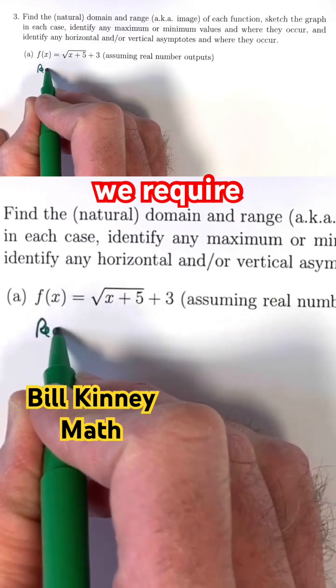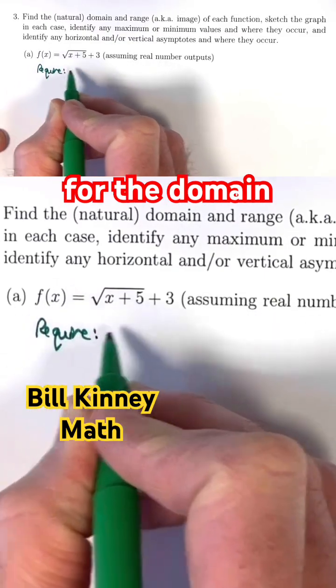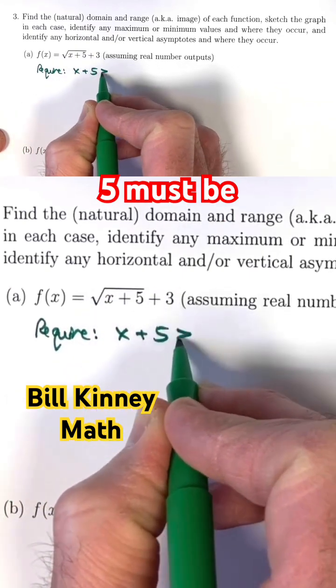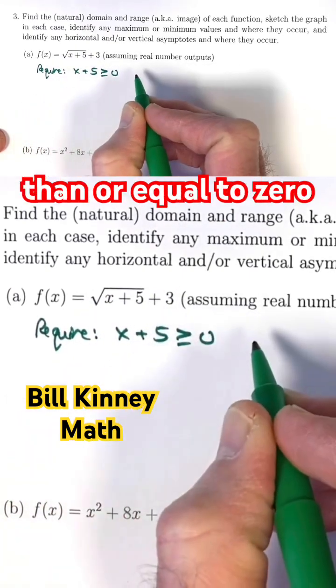So we require, for the domain, that the input for the square root here, the entire expression x plus 5, must be non-negative. It must be greater than or equal to zero.